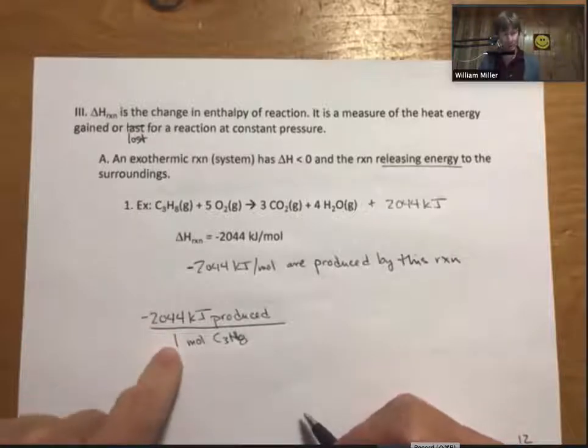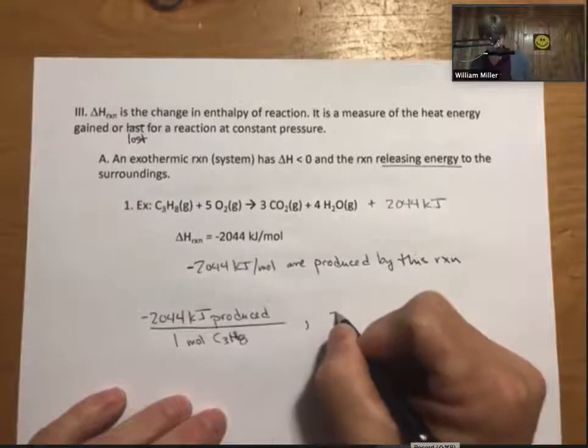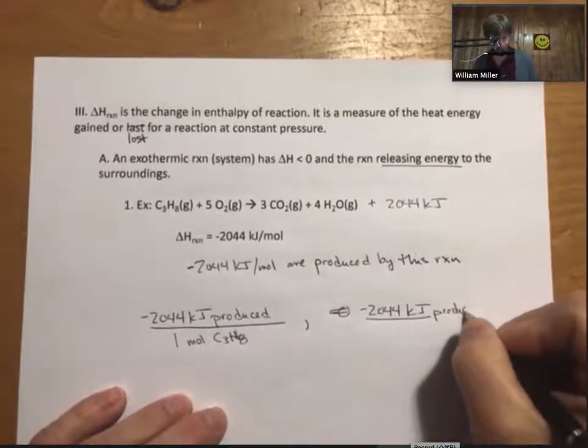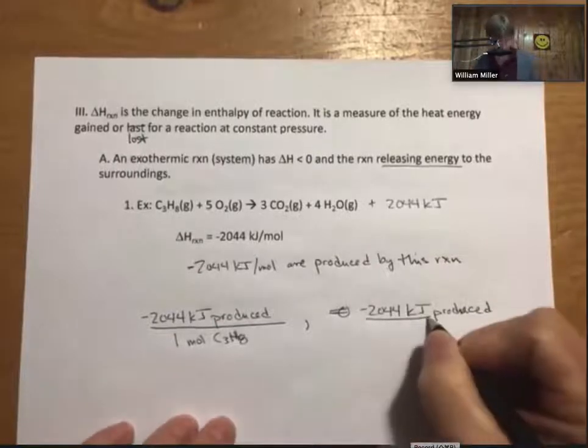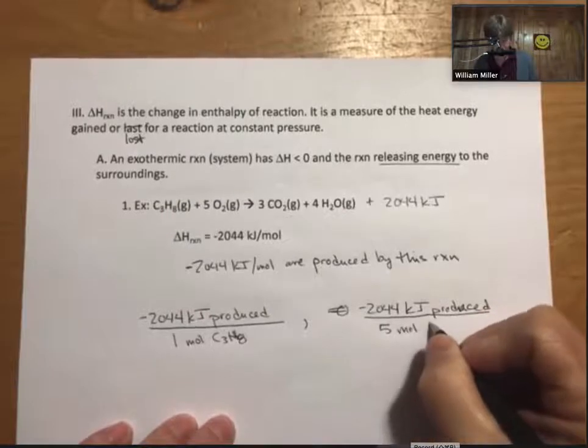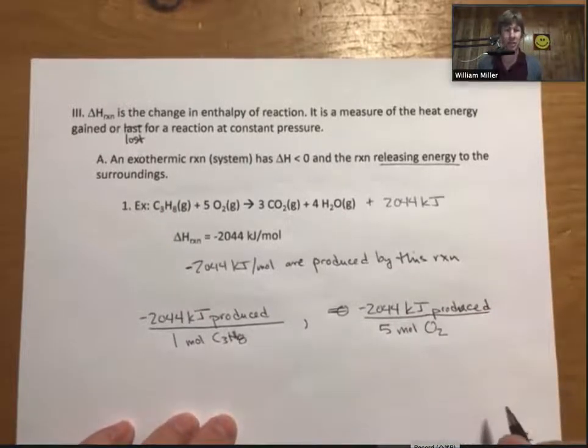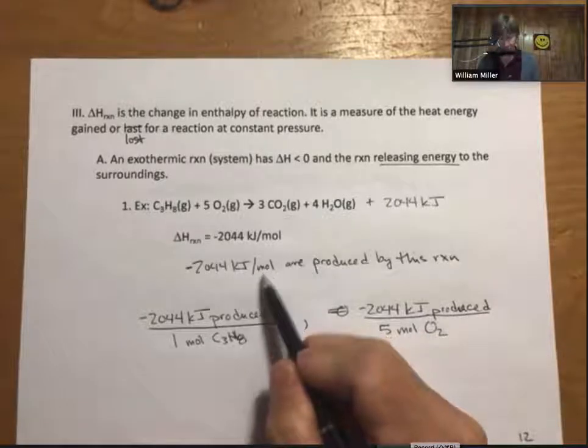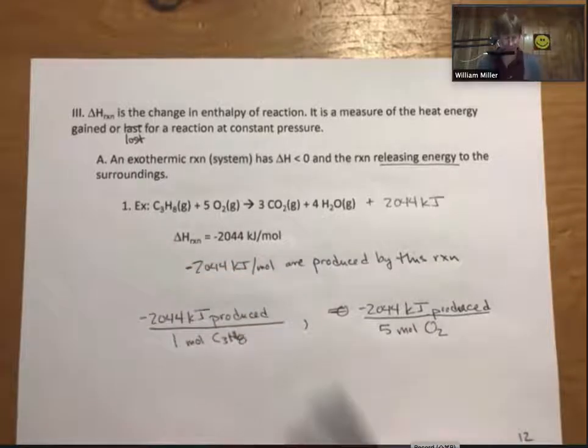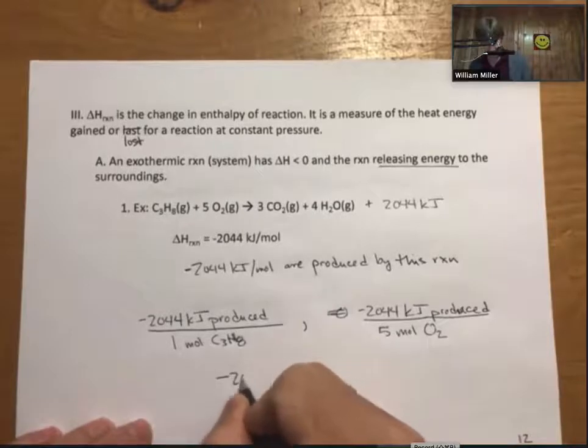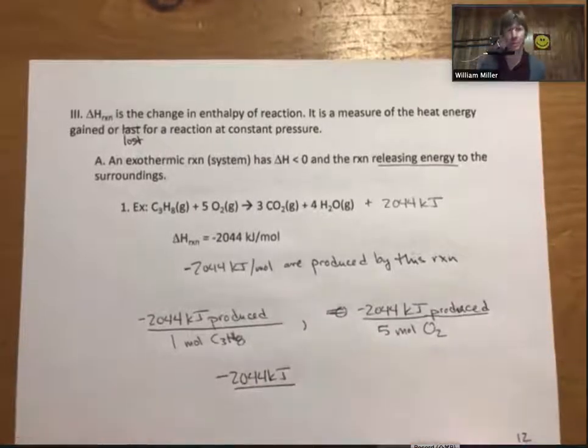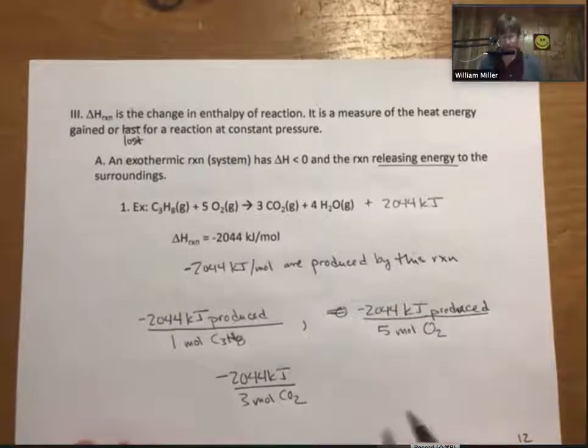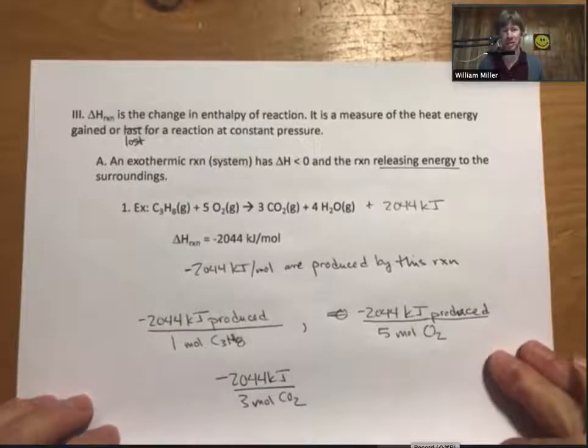per one mole of propane. And that's where the per mole comes from. It comes from if there is a one coefficient. Now, where it's complicated a little bit more, is that this same amount of energy is produced, per 5 moles of oxygen reacted. There's a unit conversion factor. And I know, so it says per mole, but that's per mole of thing with a one coefficient. It's per 5 moles of O2. It is per 3 moles of carbon dioxide. And we could do something similar for the H2O. So that's for an exothermic reaction in which energy is released or produced.